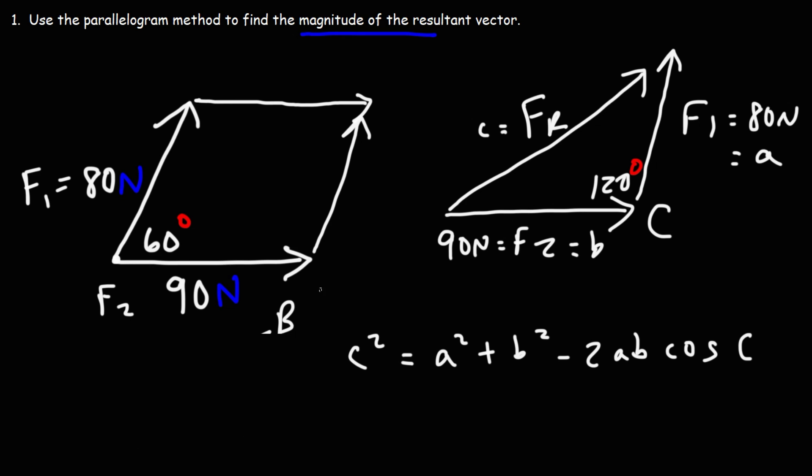So now let's get rid of this and let's plug everything in. So c squared, which will be the resultant vector squared, is equal to a squared. A is 80. B squared. B is 90. Minus 2ab, so 2 times 80 times 90. Cosine C. And angle C is 120. So now let's plug this in the calculator.